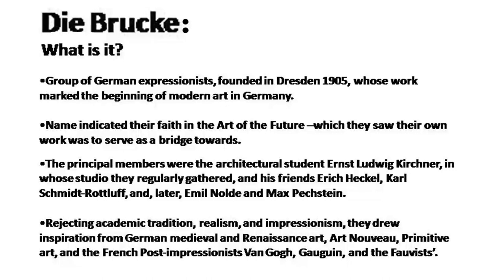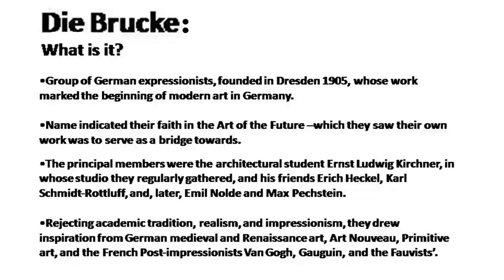Die Brücke was a group founded in Dresden in 1905, and it marked the beginning of modern art in Germany. The name indicated their faith in the art of the future, which they saw in their own work. The principal members were Ernst Ludwig Kirchner, Erich Heckel, Karl Schmidt-Rottluff, Emil Nolde, and Max Pechstein. One of the founder members was interestingly not an art student but an architecture student. They rejected academic tradition, realism, and Impressionism.